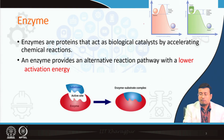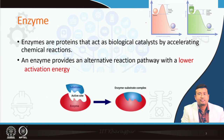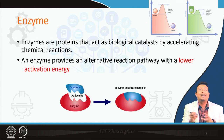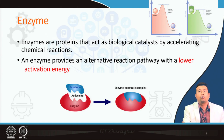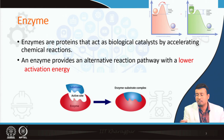We remember this figure from the last class. Enzymes are proteins that act as biological catalysts by accelerating chemical reactions. Enzymes actually provide an alternative reaction path with lower activation energy. The ball was rolling from a higher point to a lower point, not finding the energy to go over the bump, but the enzyme actually lowers the bump — this bump is the activation energy. So the enzyme has lowered the activation energy, and now the ball can roll down.